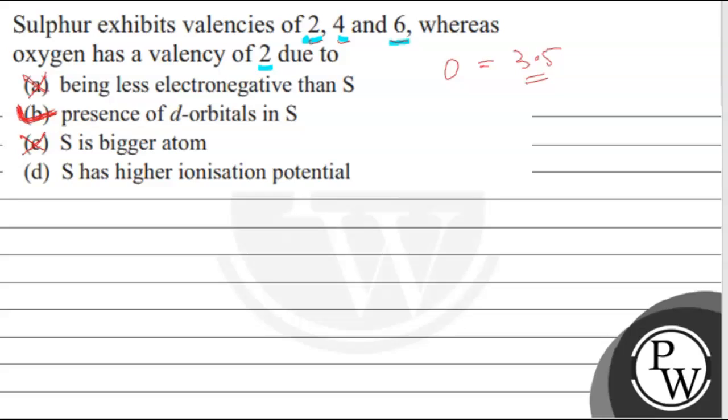S has higher ionization potential. No, S's ionization potential is less as compared to oxygen, because its valence electrons are at higher orbital and thus at distances farther from the nucleus. So, it will be easier to remove electron from the S as compared to the oxygen.